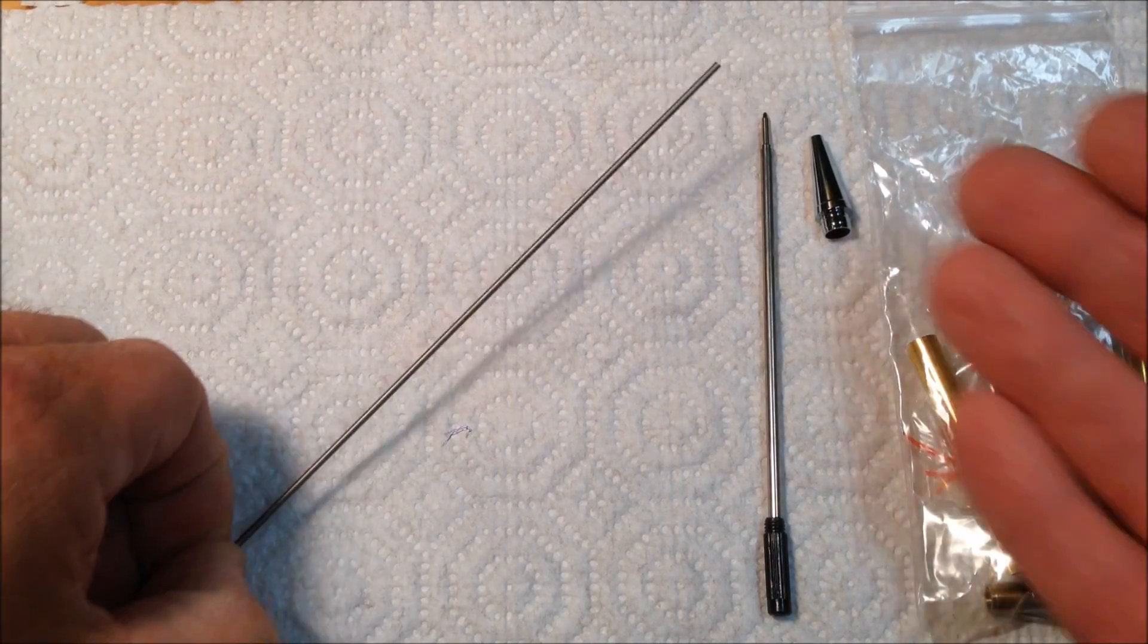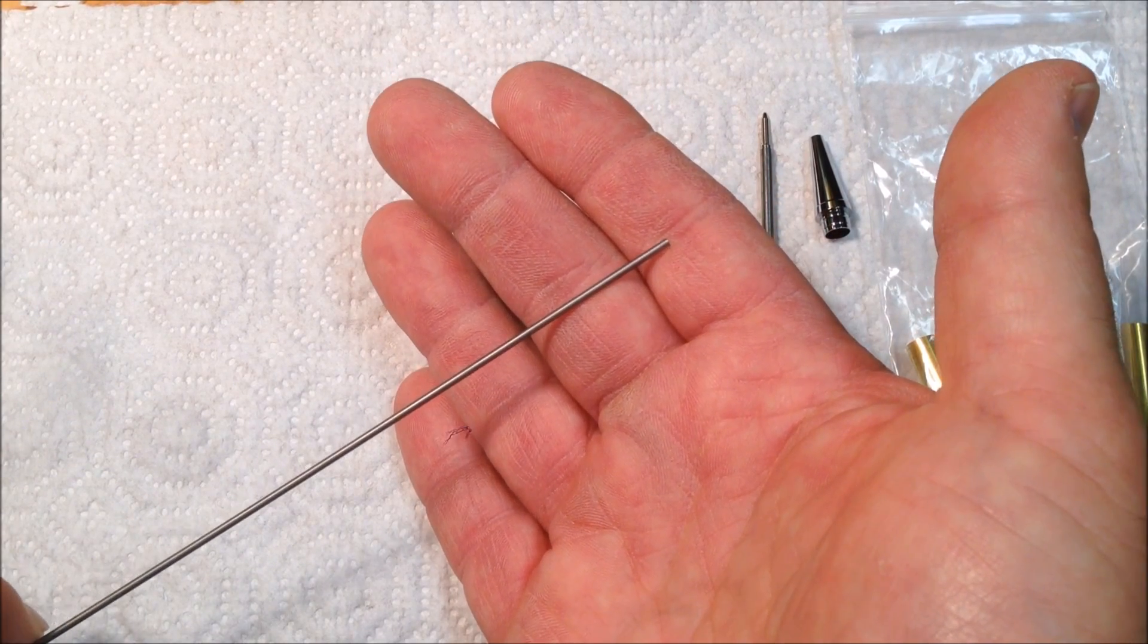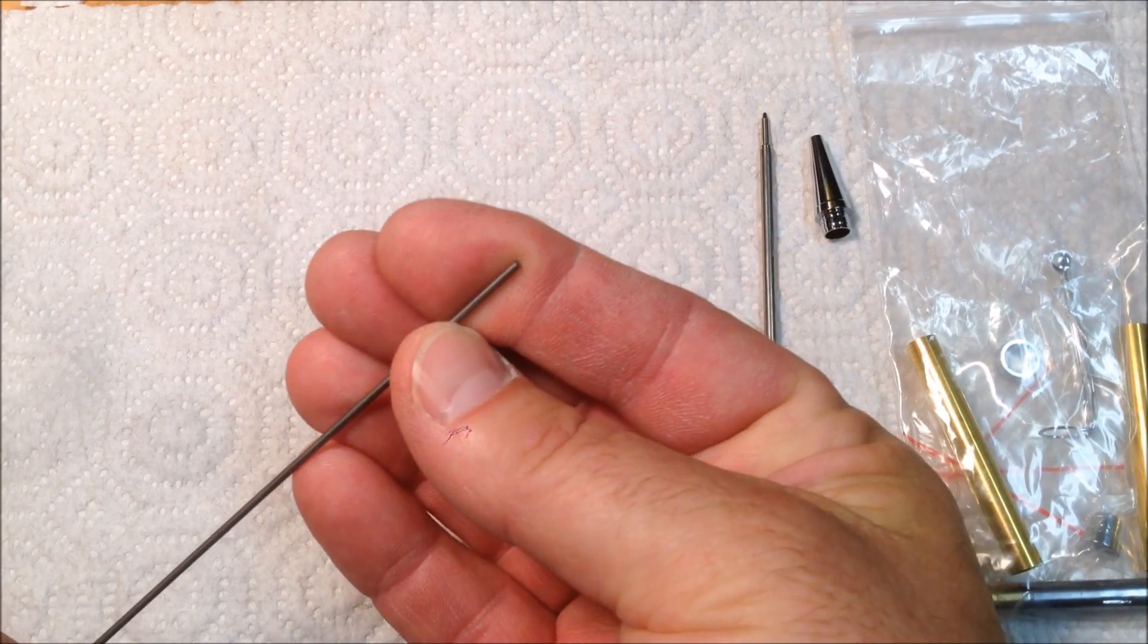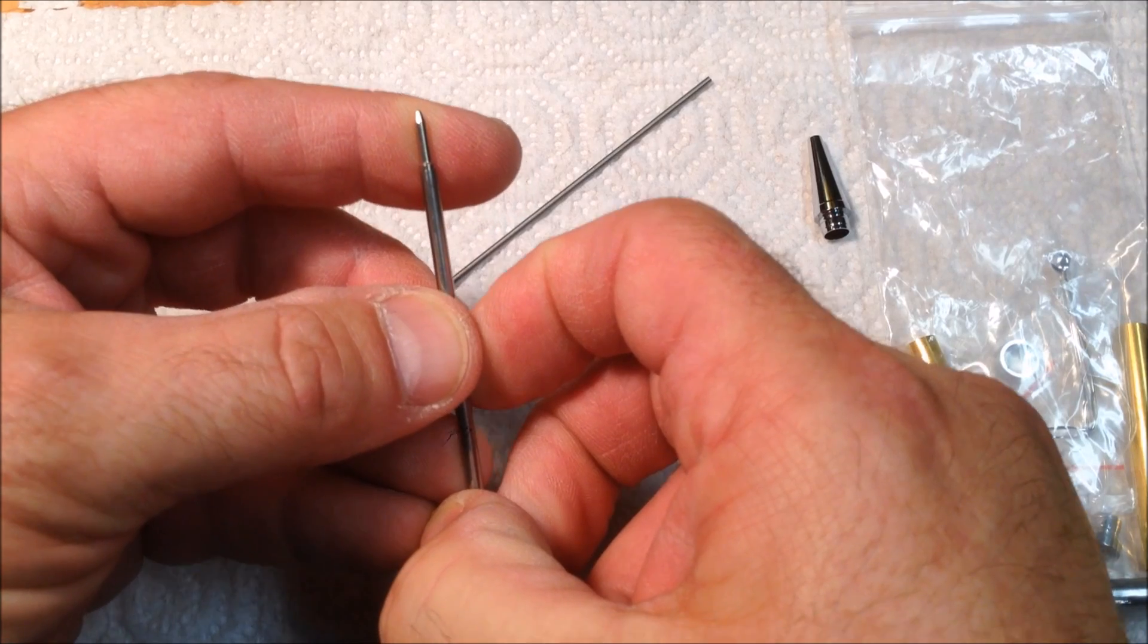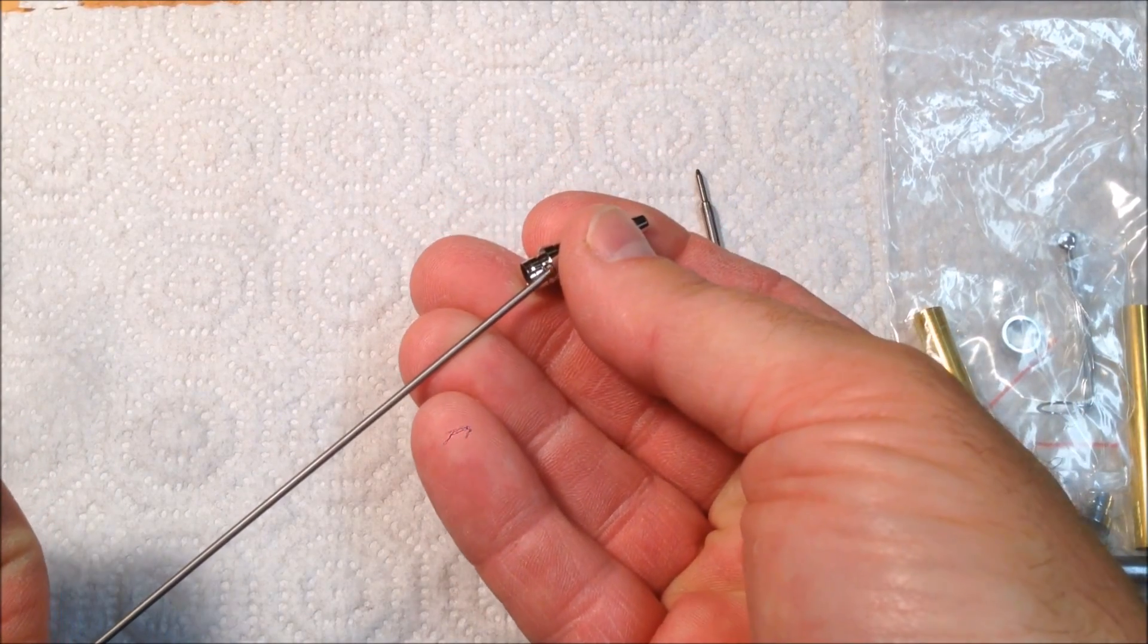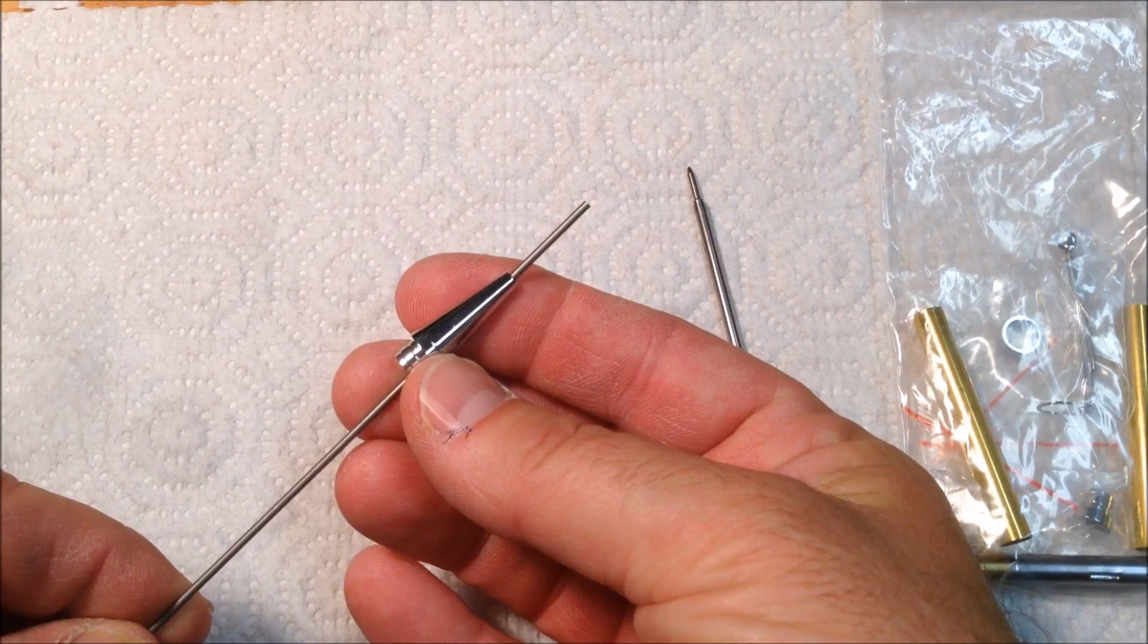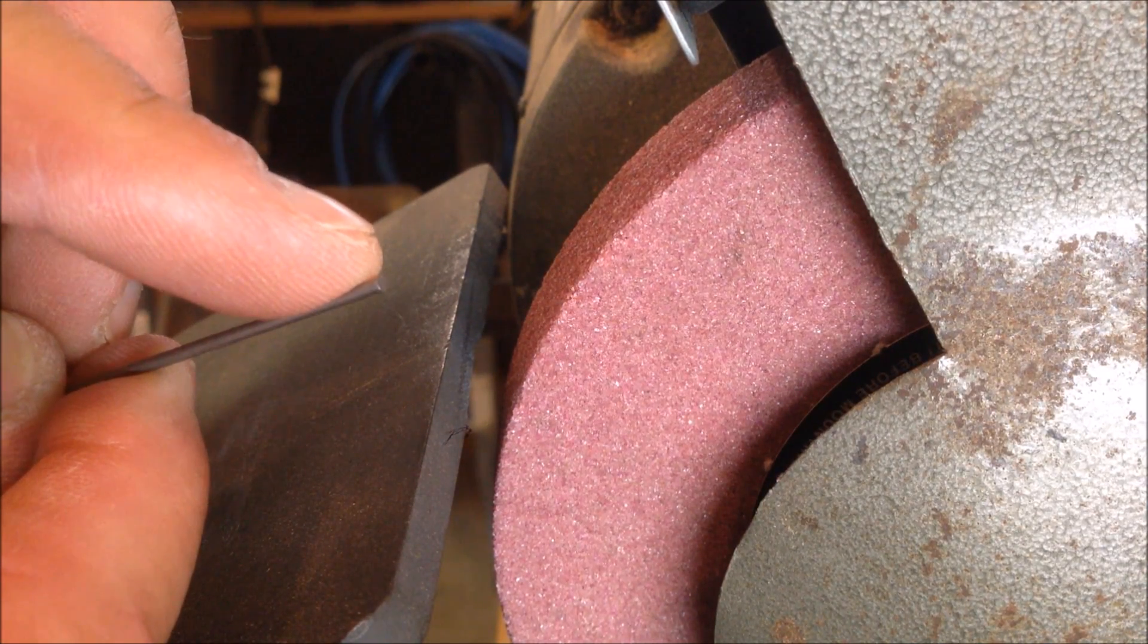This metal rod is called a tungsten tip. It's used by welders and can be purchased at any welding supply shop. The diameter of the rod is almost exactly the same as the diameter of the tip of a cross refill. The reason why I chose that diameter is because it needs to be able to fit through the tip of a slimline pen nib. I want to start out by sharpening the tip of this rod to the finest point that I can get.